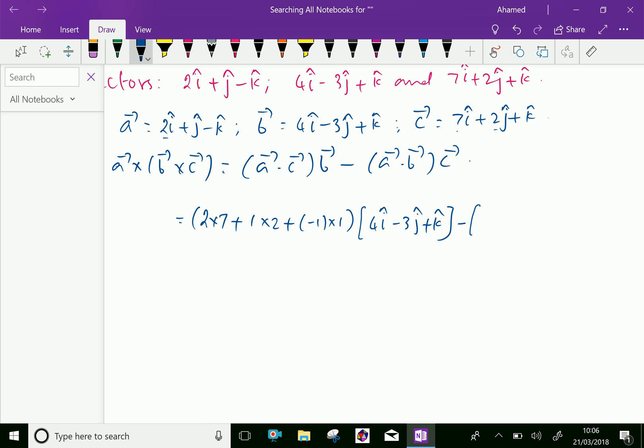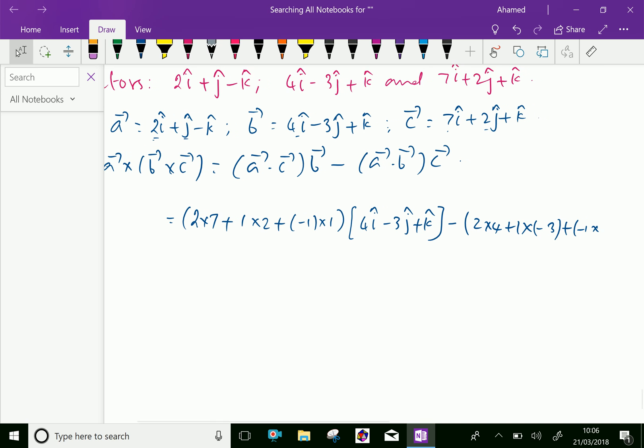Then a dot b: 2 into 4 plus 1 into minus 3 plus minus 1 into 1, multiplied with vector c, which is 7i plus 2j plus k.